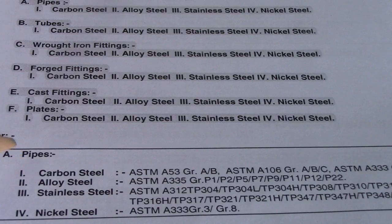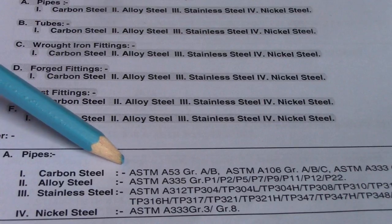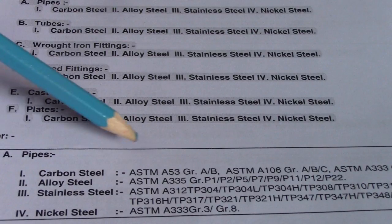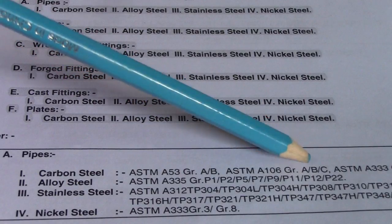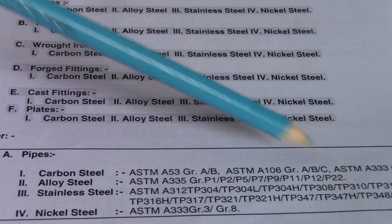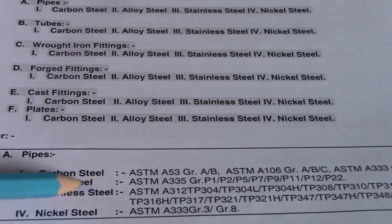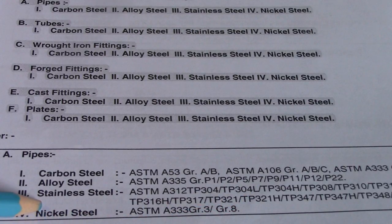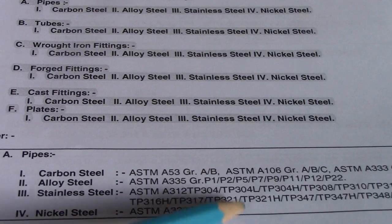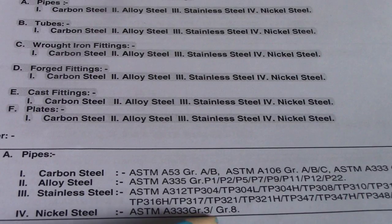So this is the answer for the pipes. For carbon steel: ASTM A53 grade A and B, ASTM A106 grade A, B, and C, and ASTM A333 grade 1 or grade 6. For alloy steel: ASTM A335 grade P1, P2, P5, P7, P9, P11, P12, and P22. For stainless steel: ASTM A312 type 304, 304L, and so on. For nickel steel: ASTM A333 grade 3 and grade 8.